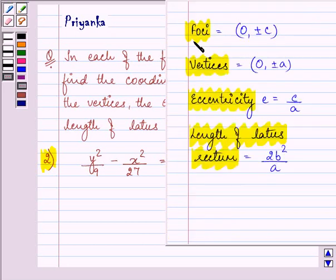Also, we need to find out the foci, which we have explained to you as 0, plus minus c, where vertices are 0, plus minus a, eccentricity, that is e, is equal to c by a and the length of latus rectum is found by multiplying 2 with b square and dividing their product by a.